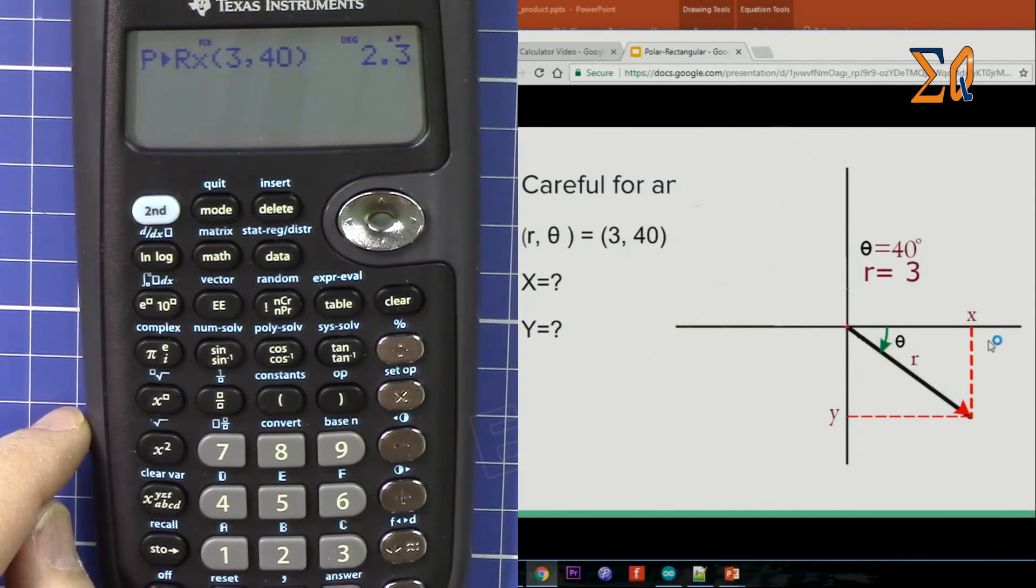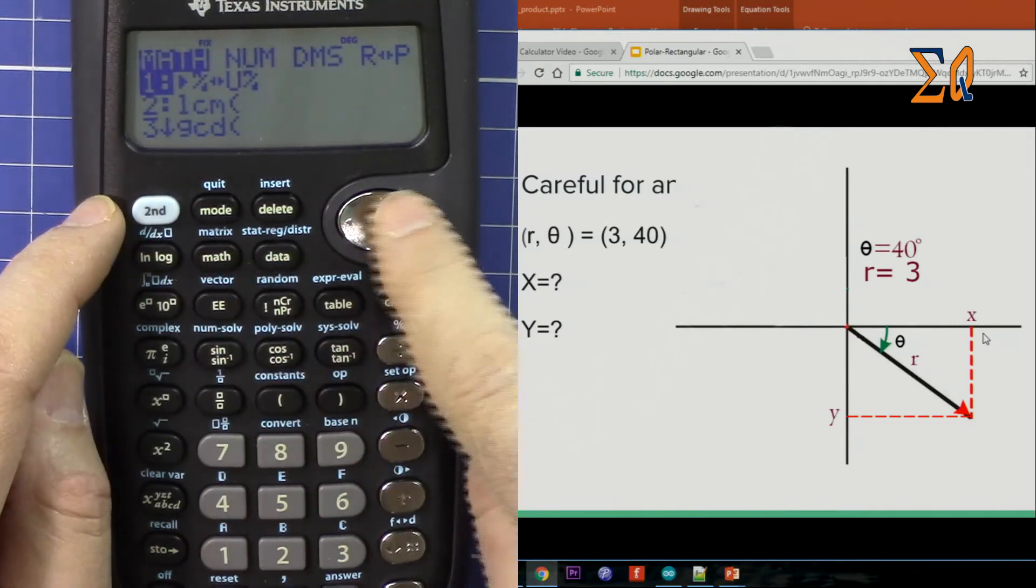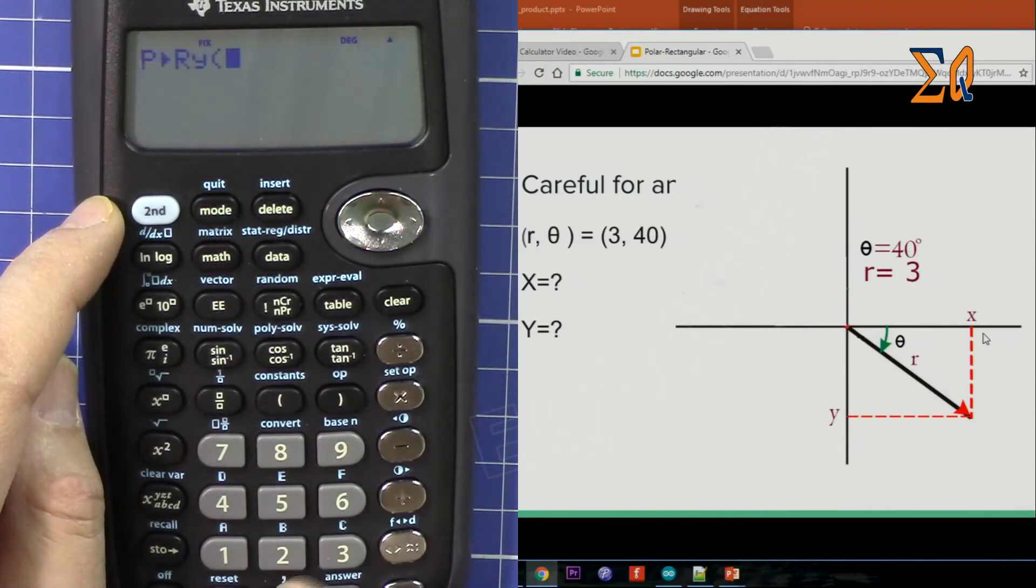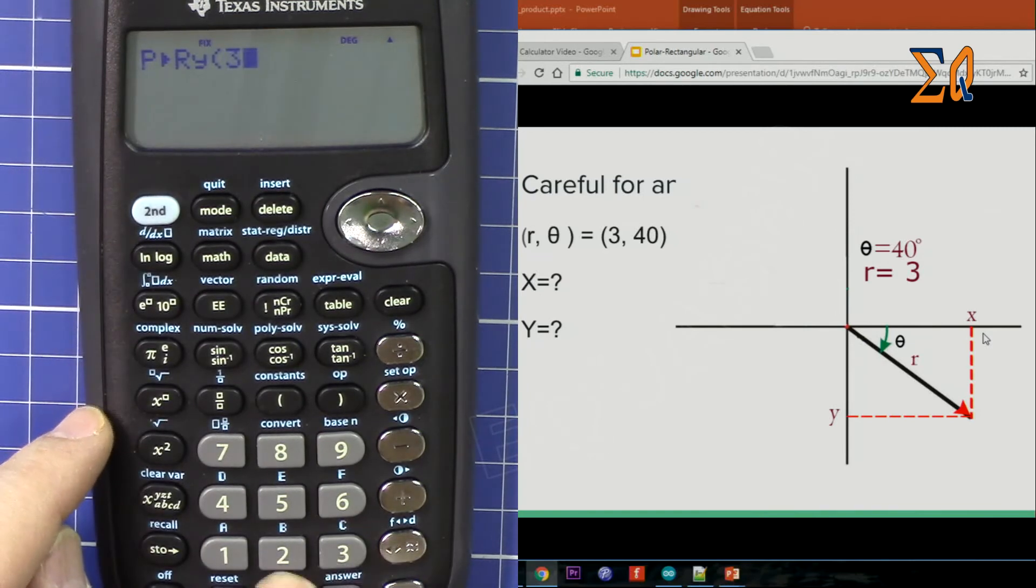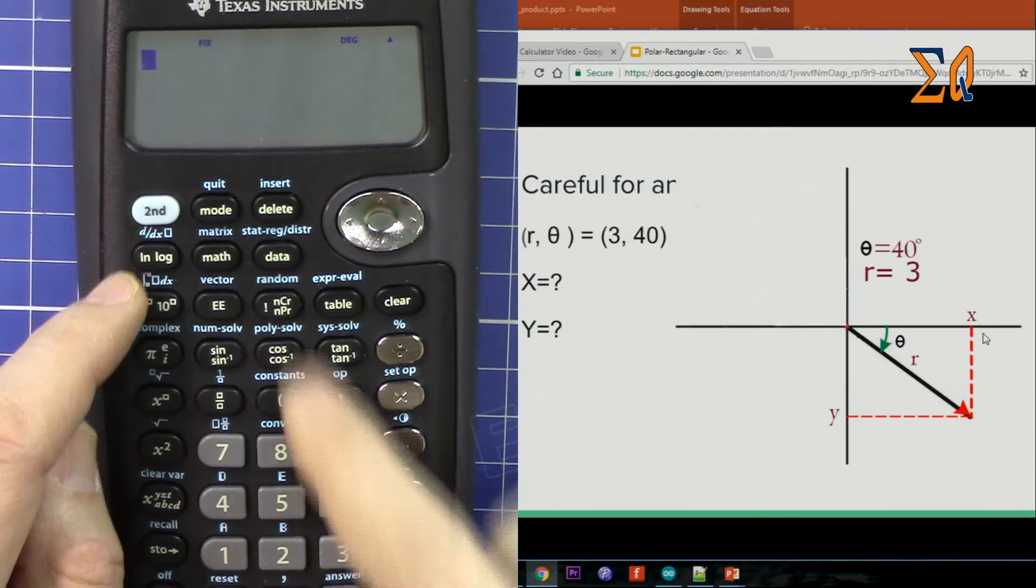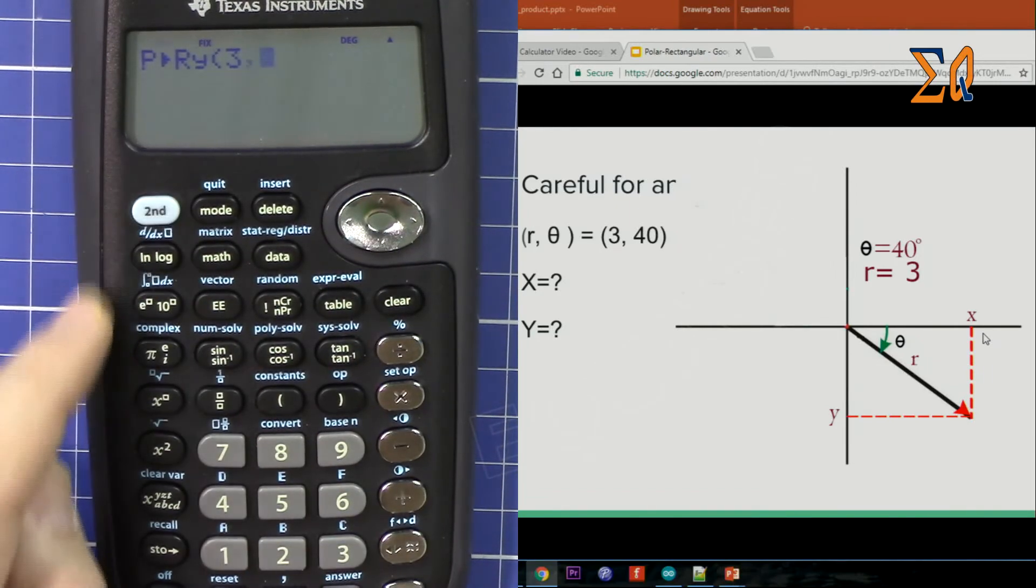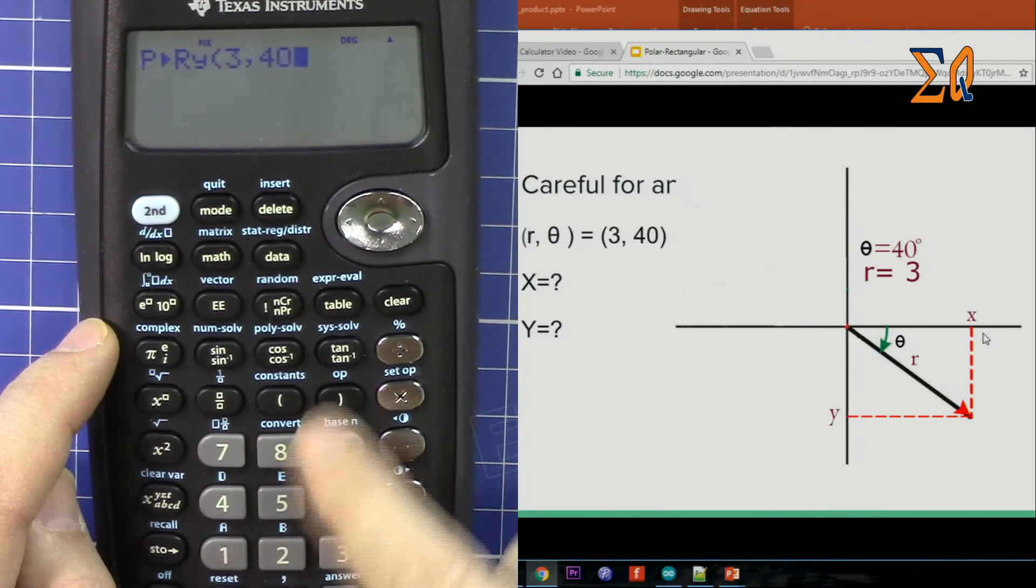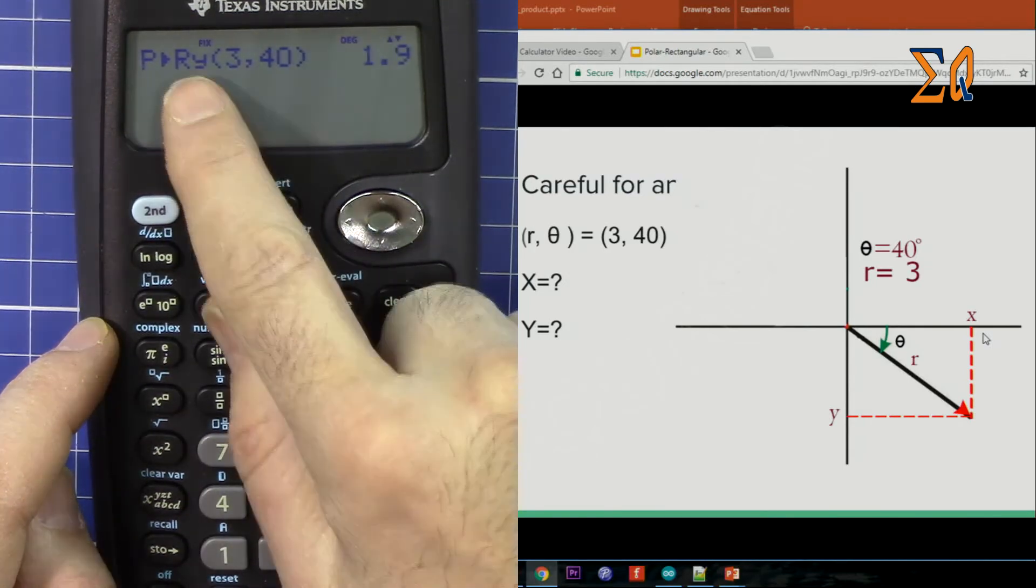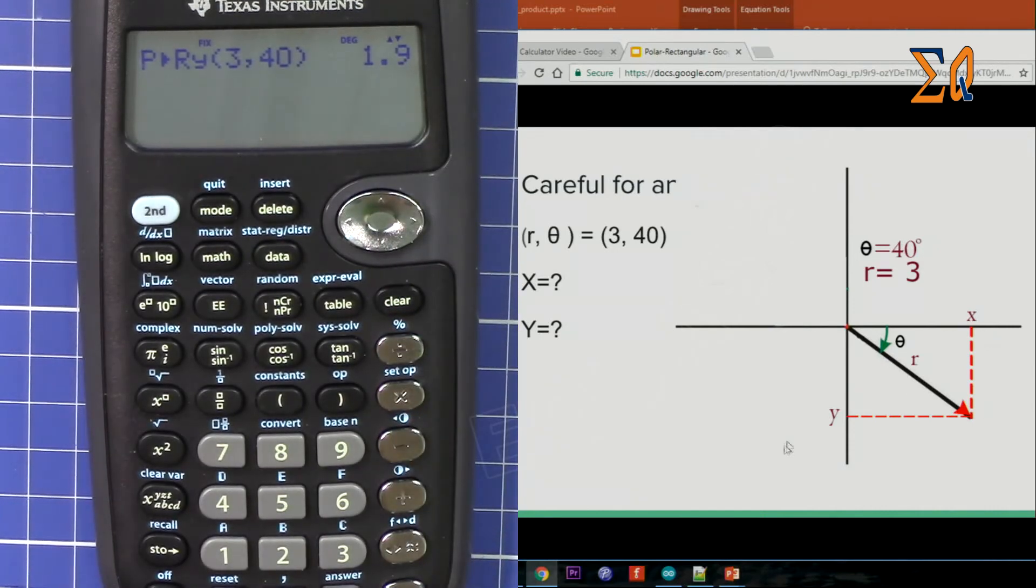And to get the Y, clear, math, 2. So 3, second function, comma, 40. So now this will give us the Y as minus 1, but the problem is that when you enter it that way, the angle is minus 40 from here, so we have to correct that.